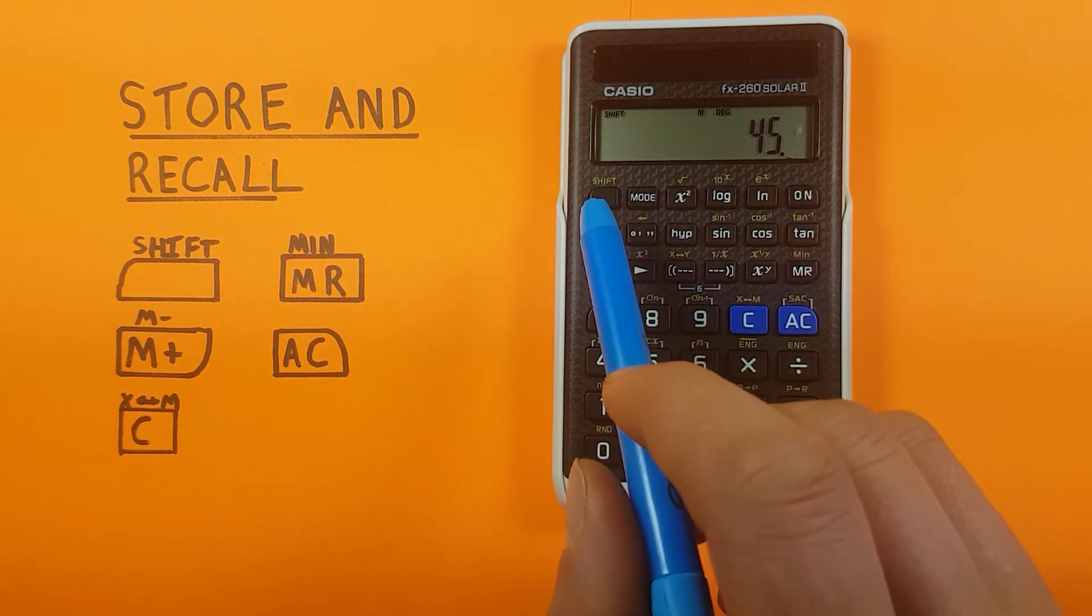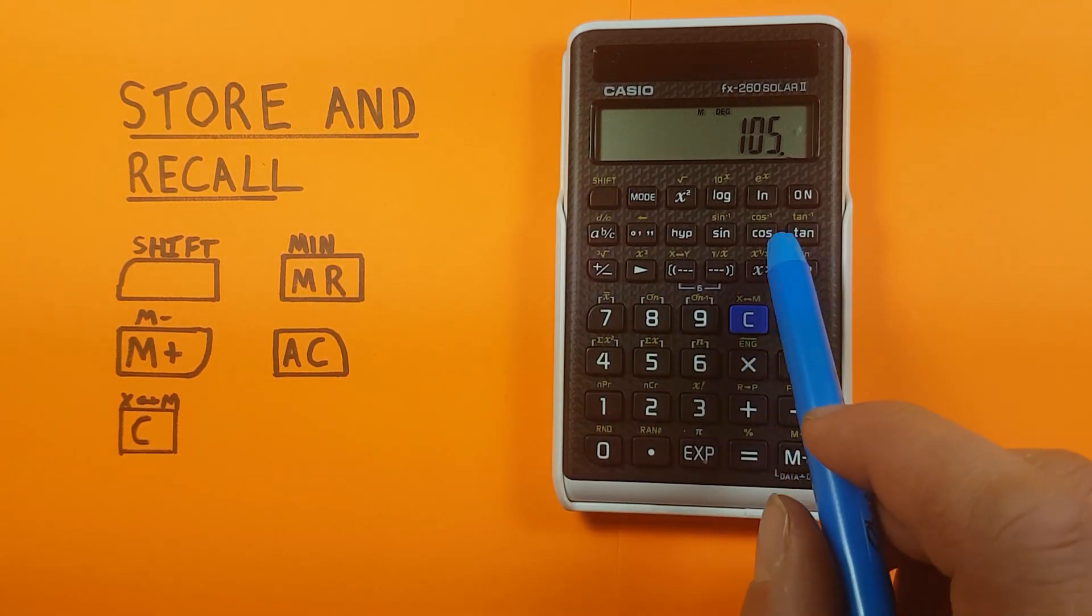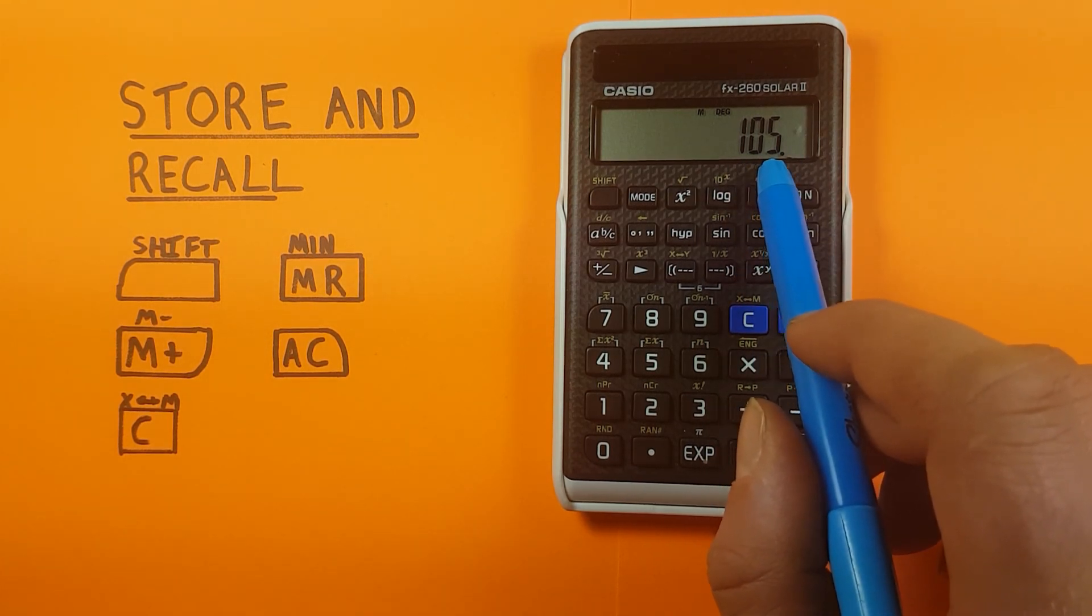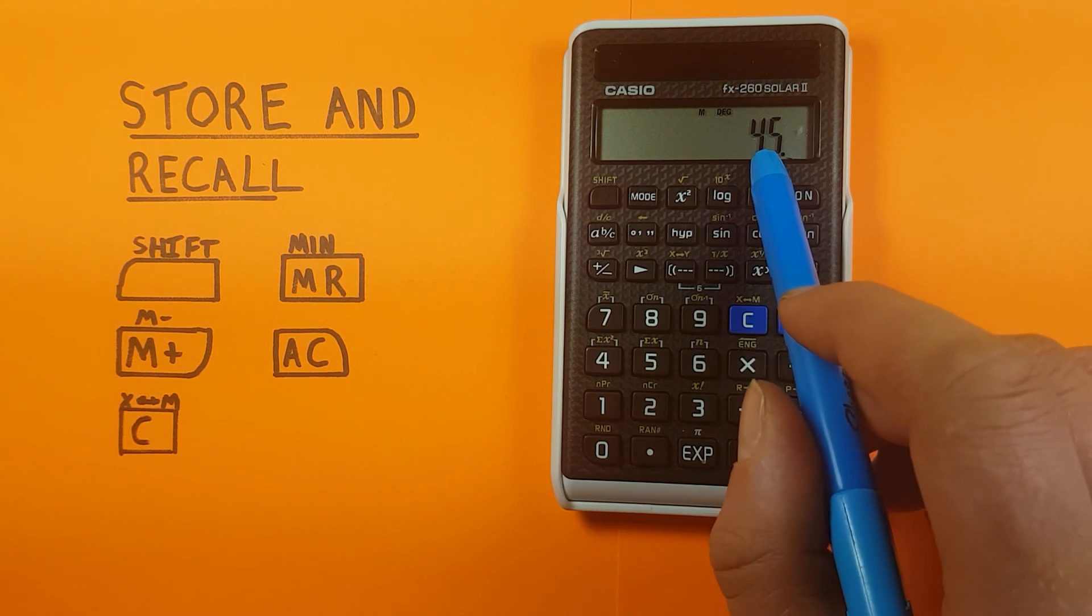We press shift C. That swaps our memory to the main screen. So remember, that was 105. And then if we press the MR, there's our 45.